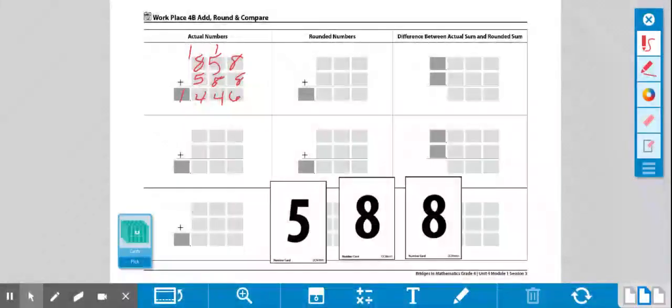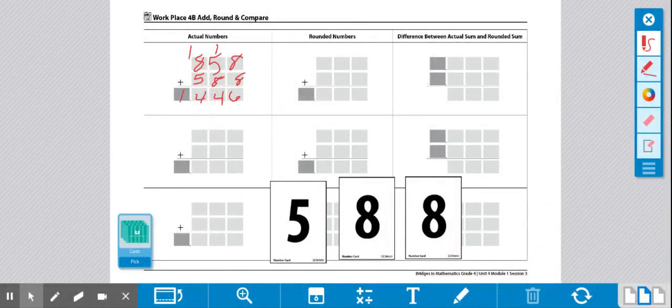Now I'm going to round them to the nearest 100. So 858 rounds to 900, and 588 rounds to 600.